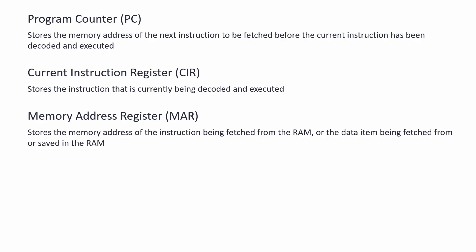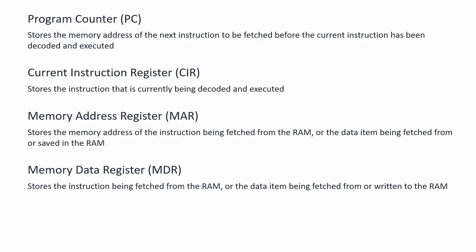The memory address register stores the memory address of the instruction being fetched from the RAM, or the data item being fetched from or saved to the RAM. Program instructions are only ever fetched from the RAM, but data items can move in both directions. Memory addresses only ever travel in one direction — the address bus is unidirectional — but the data bus is bidirectional. The memory data register stores the actual instruction being fetched from the RAM, or the data item being fetched from or written to the RAM. Data items can move in both directions, but instructions only ever come from the RAM. Finally, the accumulator stores the intermediate results of calculations.